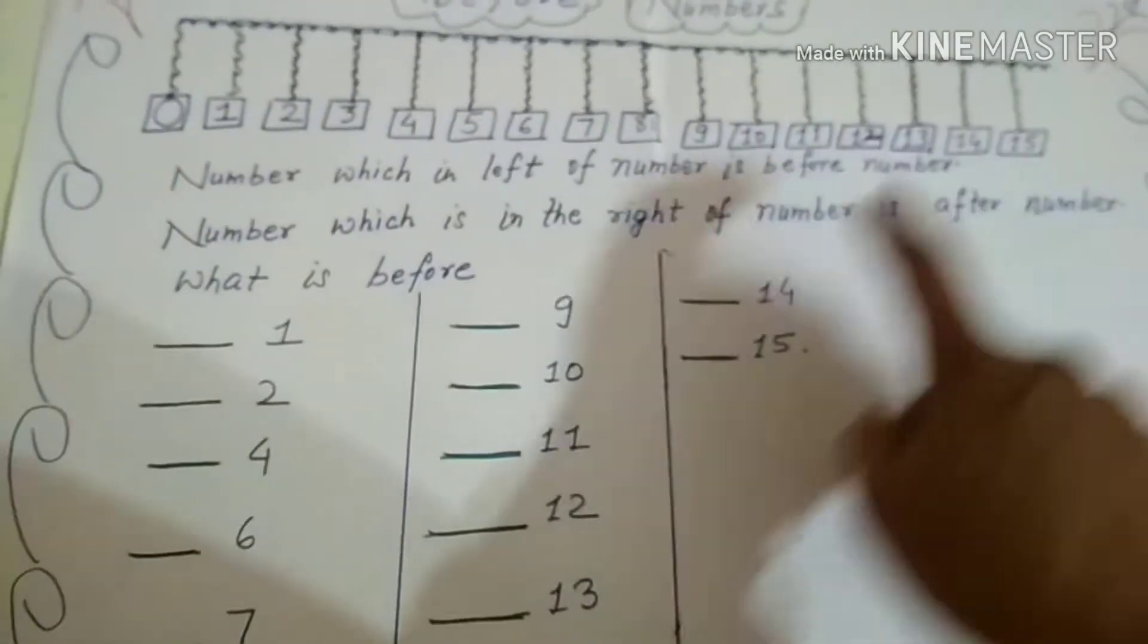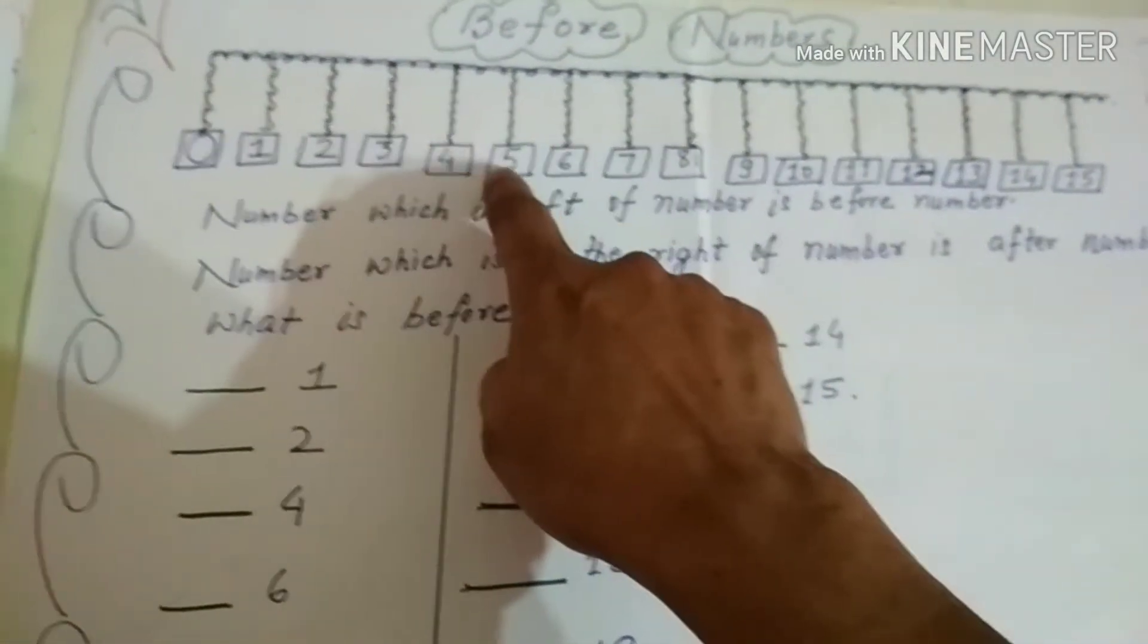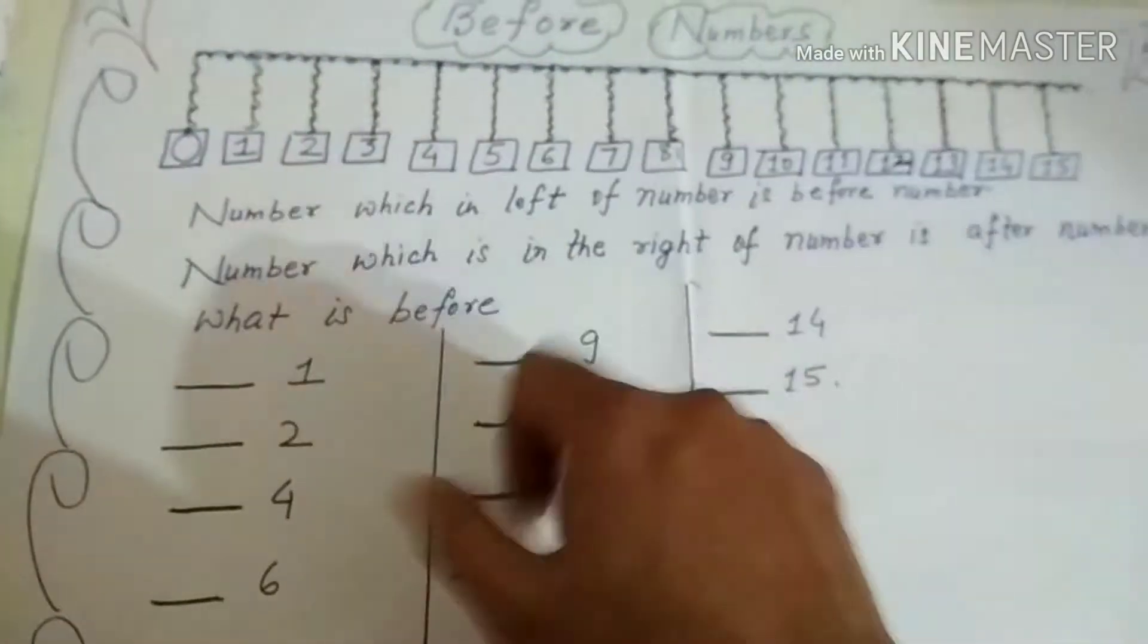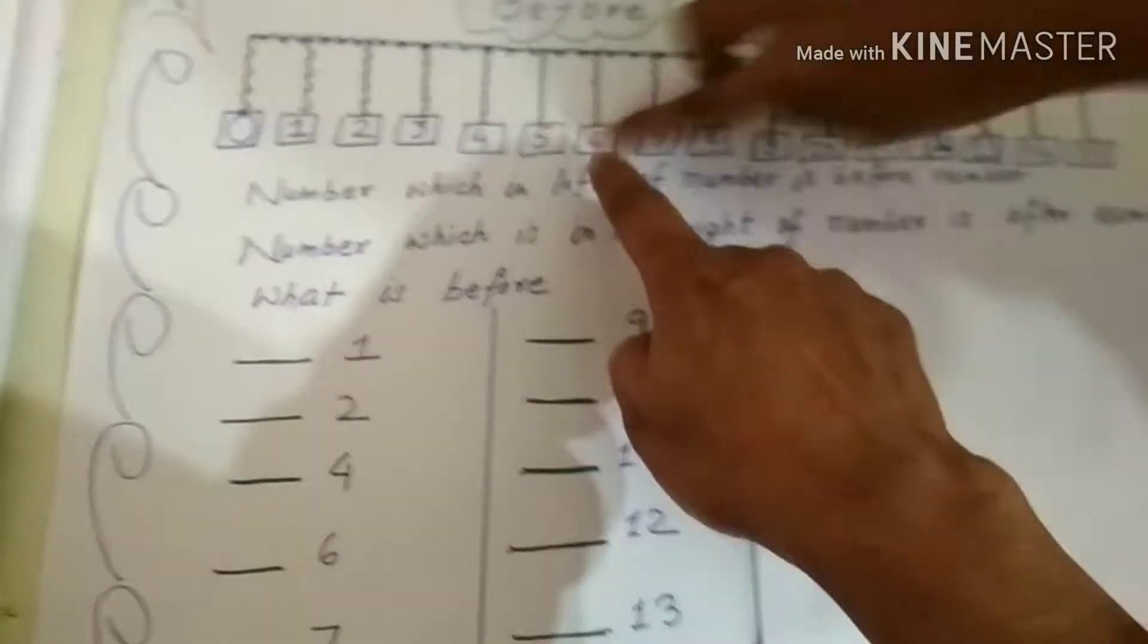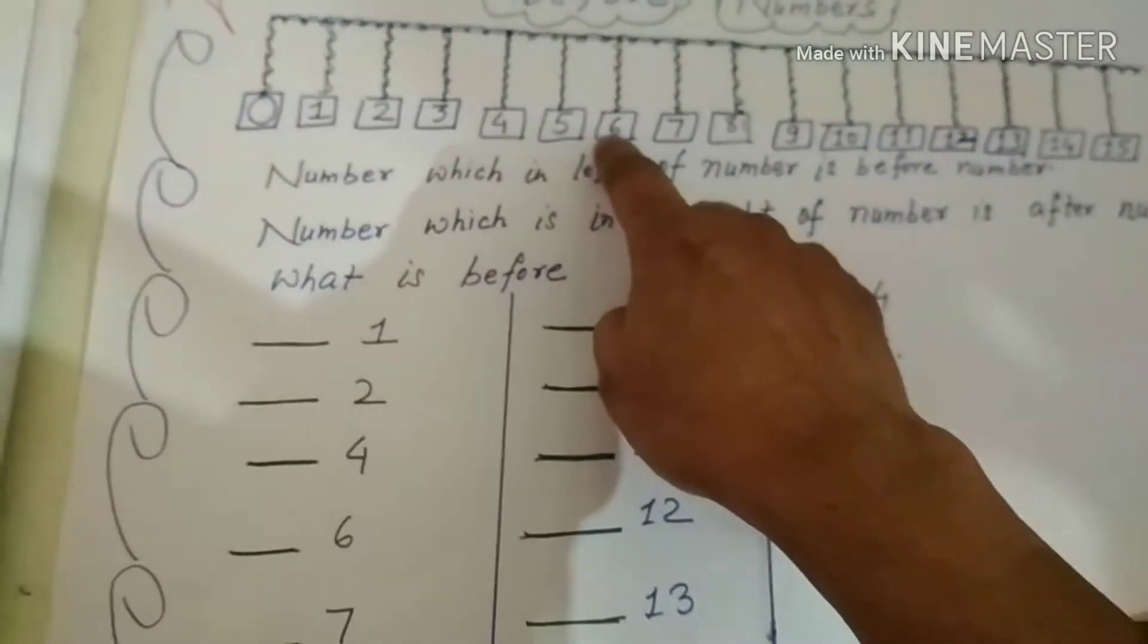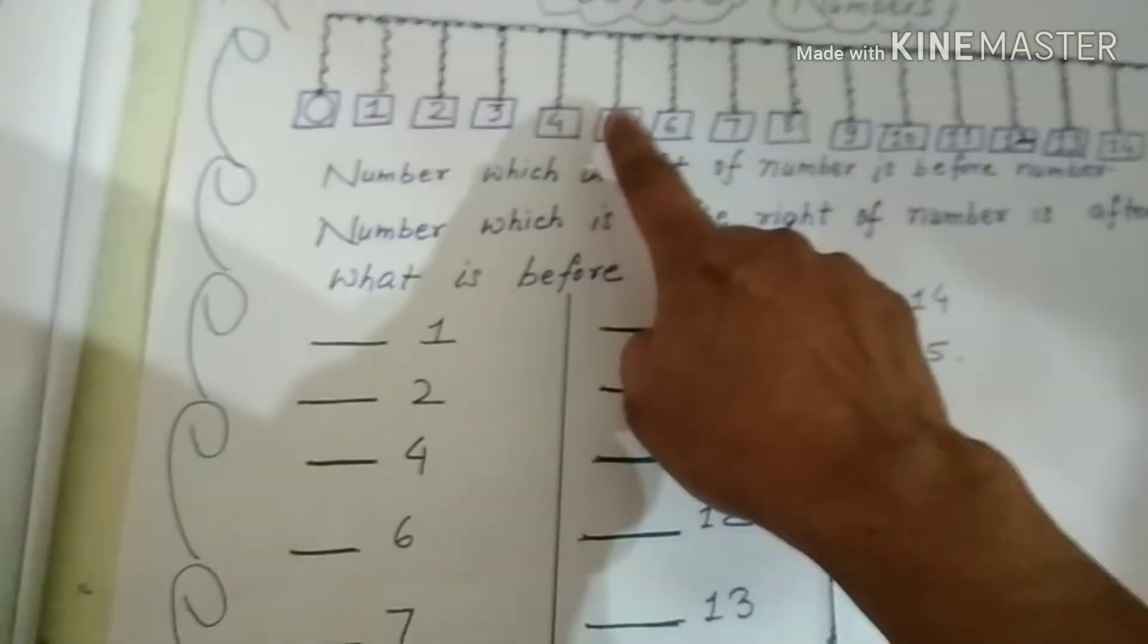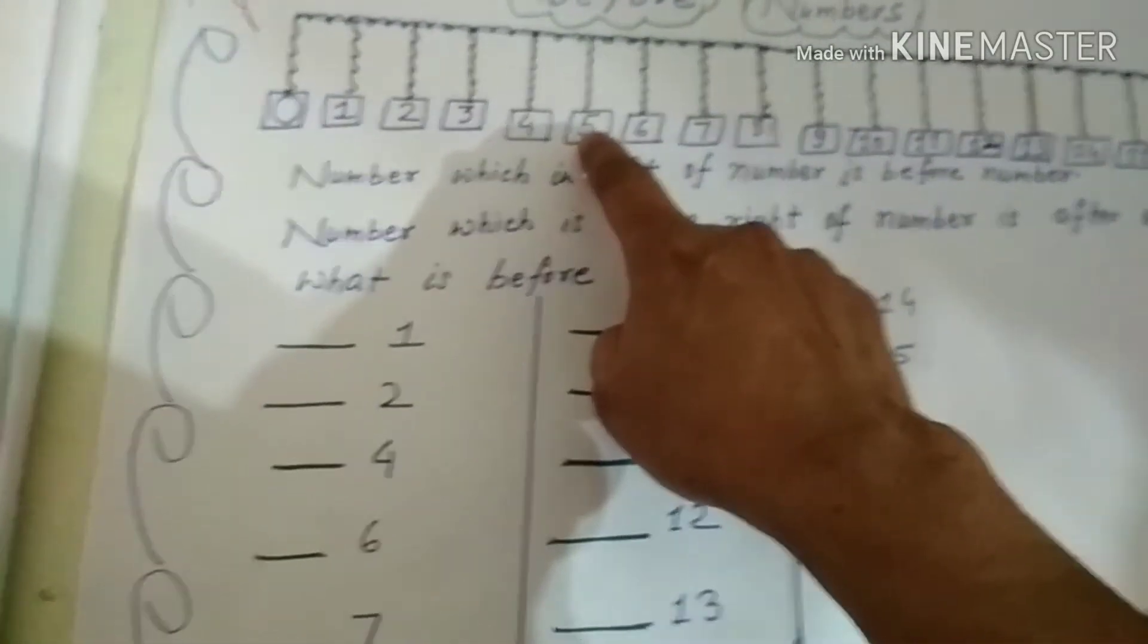You may give the concept that before number is left of the number. Where is 6? Here. Here is 6. What is before 6? 5. 5 is left of 6. 5 is before 6.